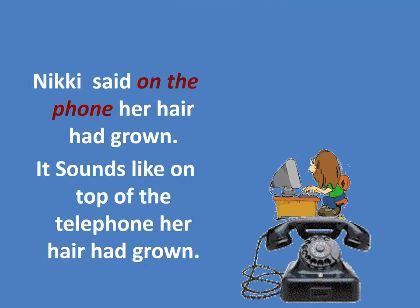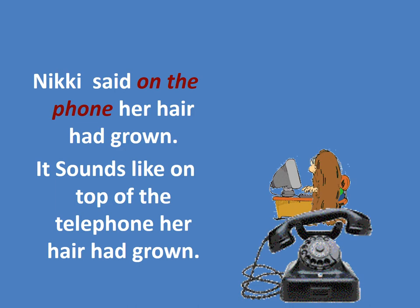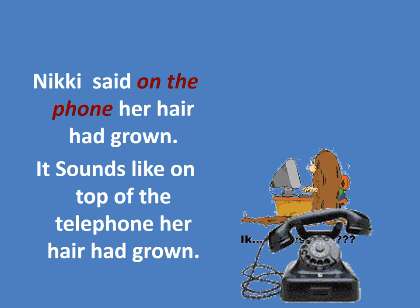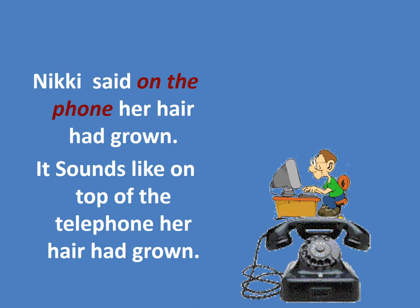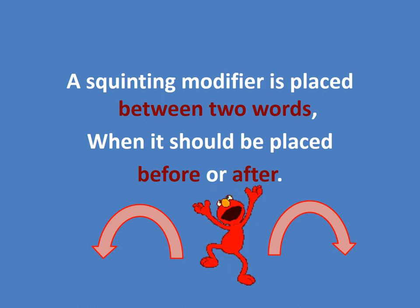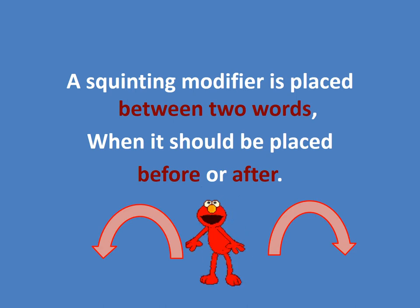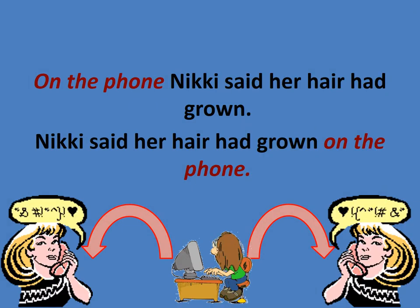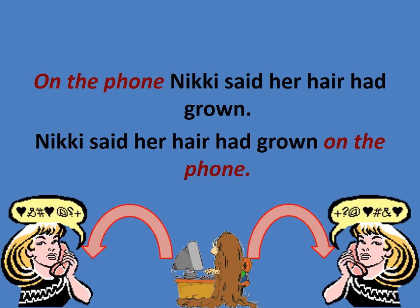For example: 'Nikki said on the phone her hair had grown' — it sounds like her hair grew on top of the telephone! The fix: 'On the phone, Nikki said her hair had grown,' or 'Nikki said her hair had grown on the phone.' The modifier must be clearly placed before or after the correct word.